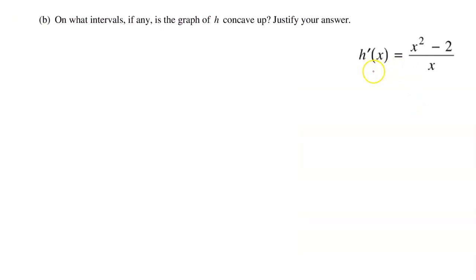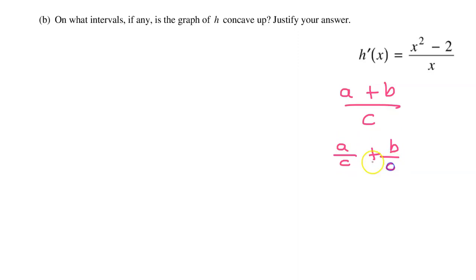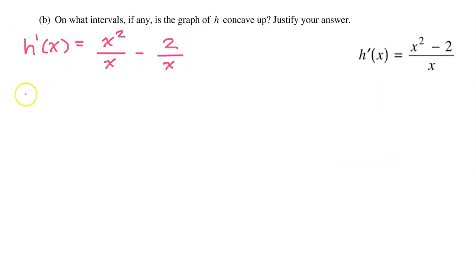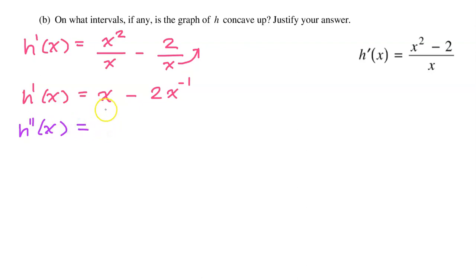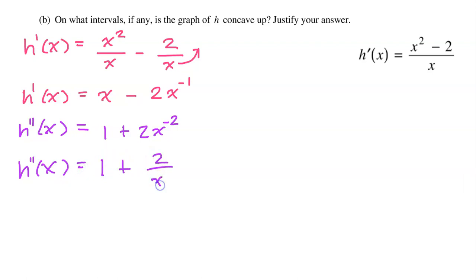We are given h prime, so let's find h double prime. First, I'll rewrite h prime using the principle that (a + b)/c can be rewritten as a/c + b/c. So h prime can be written as x minus 2 times x to the negative 1 power. Taking the derivative, the derivative of x is 1, and using the power rule, negative 1 times negative 2 gives positive 2 with the negative 2 power. So h double prime equals 1 plus 2 over x squared.